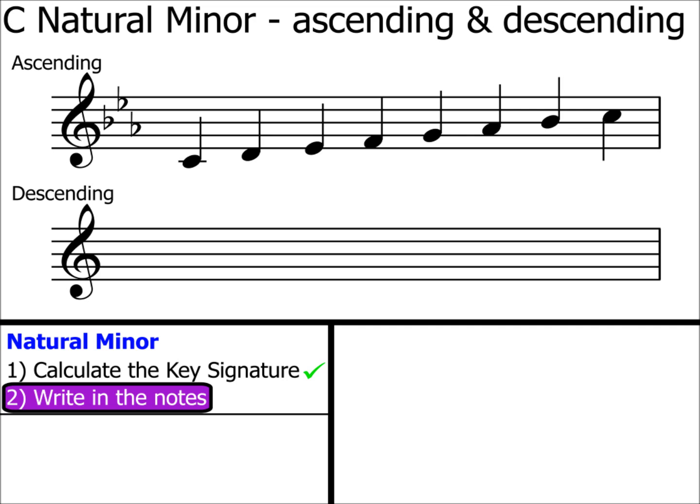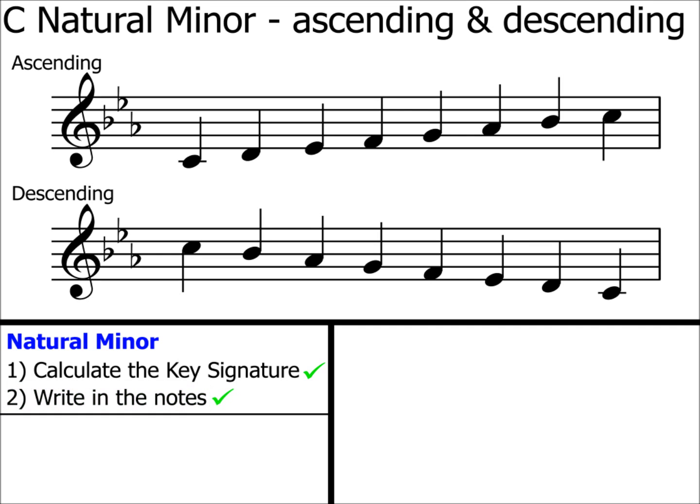Now, I've written my ascending and descending scales in different bars, purely to save space. You could write it on one line if you prefer. So, making sure we include the key signature. Here's the starting C. And ensuring that there is a note on every line and in every space, all the way down to the next C. That's it. Steps 1 and 2 complete. This is C natural minor ascending and descending.